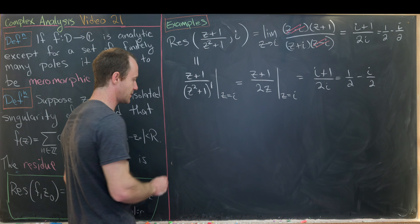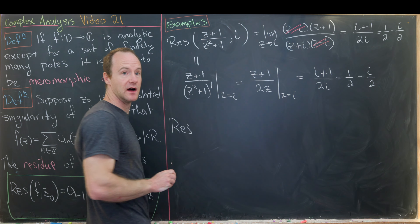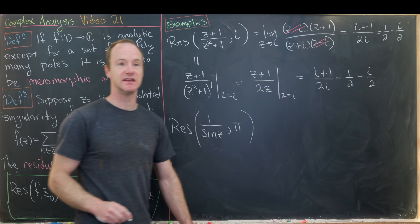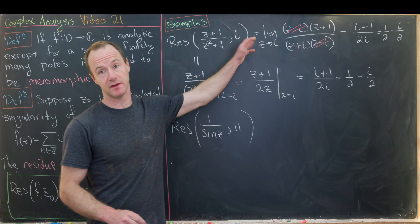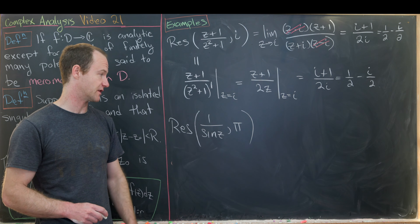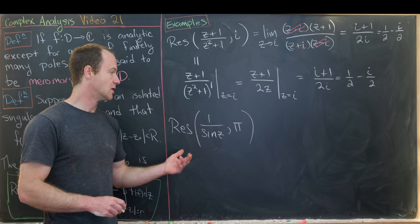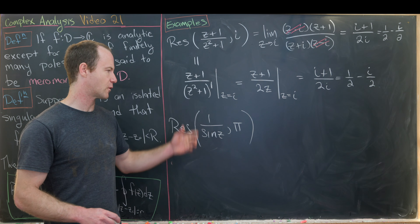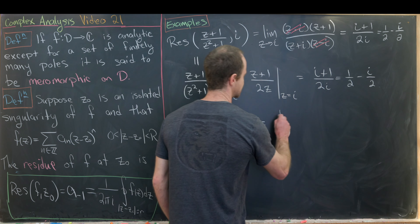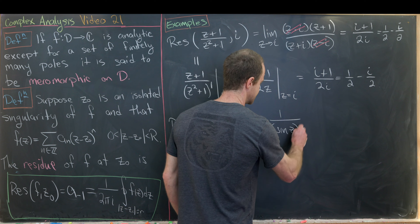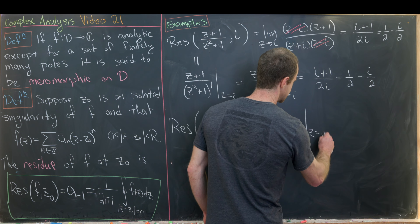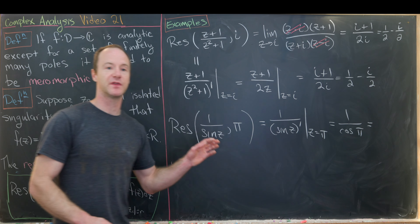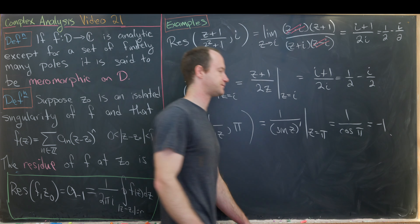Now let's find the residue of 1/sin(z) at z = π. Since π is a first-order zero of sin(z), it is a first-order pole of the whole function. Using the second method: 1 over the derivative of sin(z) evaluated at z = π, which is 1/cos(π) = 1/(−1) = −1.